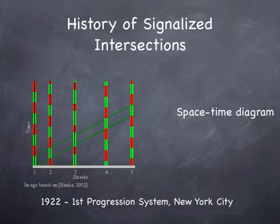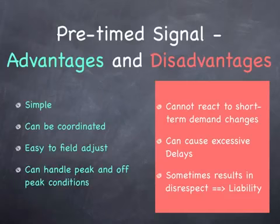Fixed-time signals work very well with coordination because you're smoothing out any variability that you might have with a fully actuated signal. With a fully actuated signal, it's much harder to maintain a green wave — it can be done with computer algorithms, but it's harder. Pre-timing helps a lot with signal coordination. It can be adjusted in the field pretty easily — a tech can go out and adjust some dials and change the plan, and you can set it for on-peak and off-peak. But you can't respond to short-term changes in traffic levels, it can cause needless delays, and if it results in disrespect because it's set very poorly, that can result in liability issues.